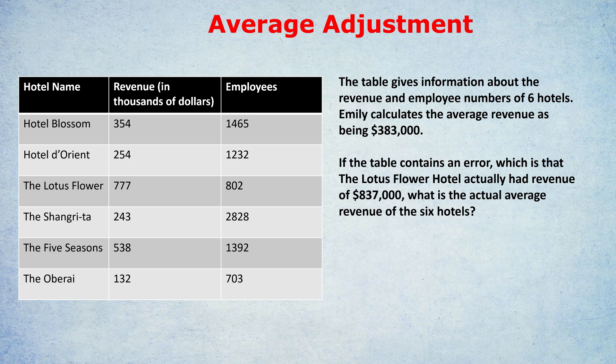I ask you to confess — would you have done the following? $837,000 for Lotus Flower, plus $254,000 for Hotel de Orient, plus $354,000 for Hotel Blossom, and so on. But now imagine the chart had 16 hotels or 26 hotels. You would really be in trouble — it'd be taking a long time. So how can we avoid that long method?